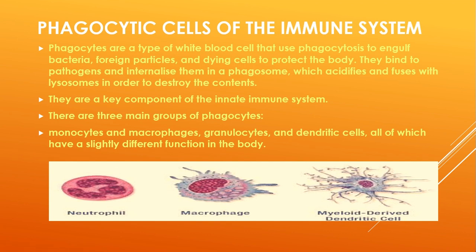Phagocytes are key components of our innate immune system. There are two types of immune systems: innate, which you acquire by birth, and adaptive, which is artificial immunity acquired after birth. The three main groups of phagocytes are neutrophils, macrophages and monocytes, and dendritic cells, all of which have slightly different functions in the body.